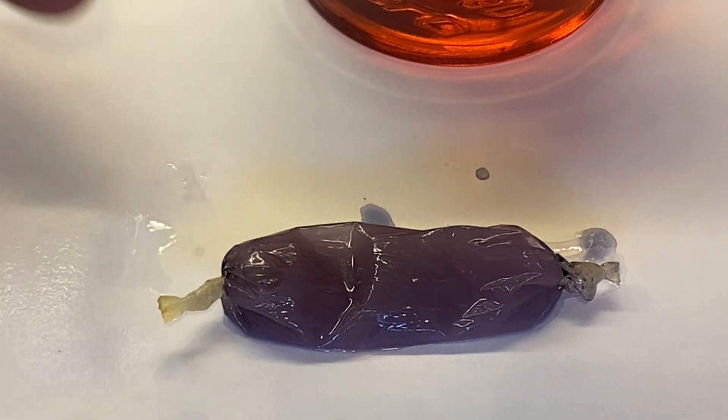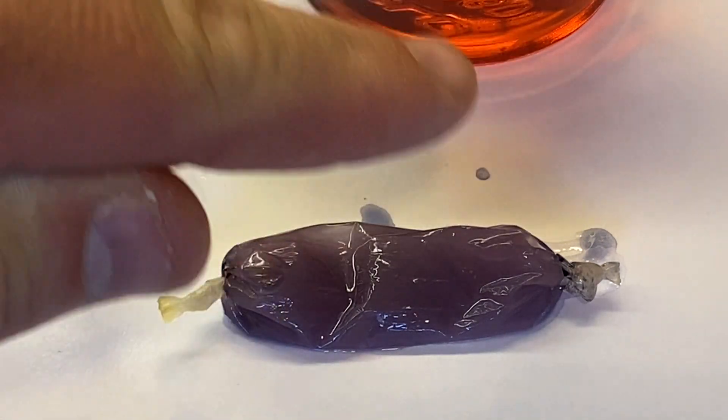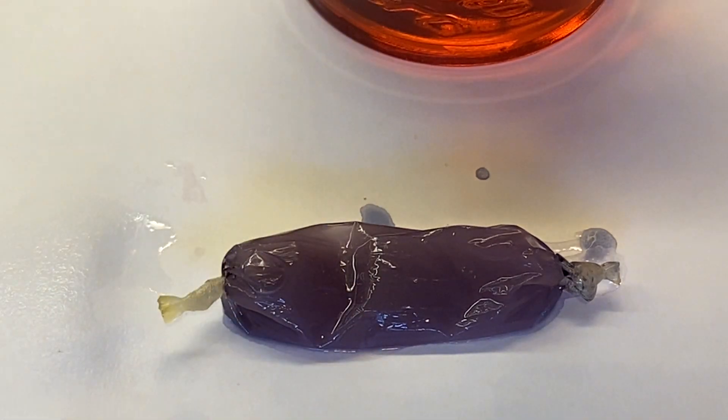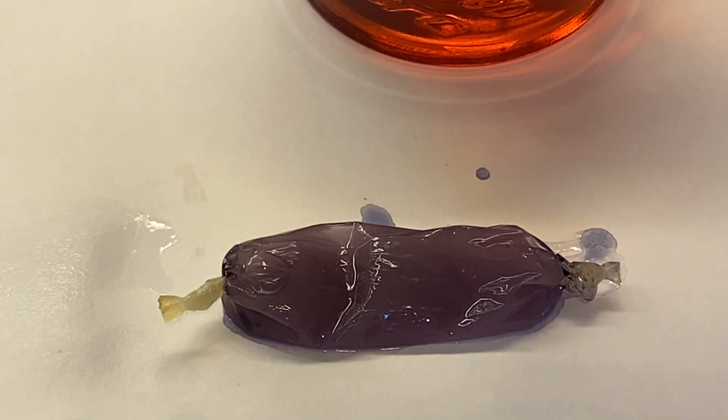However, now the iodine that was in this cup has gone into the cell because the cell is semi-permeable. The Lugol's solution, or the iodine, is very small. It's a very small molecule, so it's able to go through the membrane and into the cell.